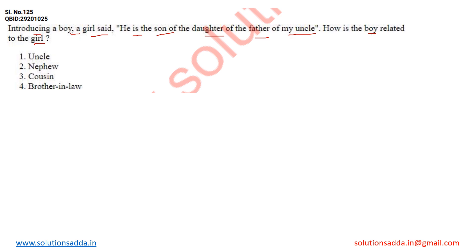This question is from the reasoning blood relationship chapter. In order to solve such questions, first of all make a representation symbol. In my explanation, I will be representing a female by a circle and a male by a square, and make a hierarchy of the relationship.